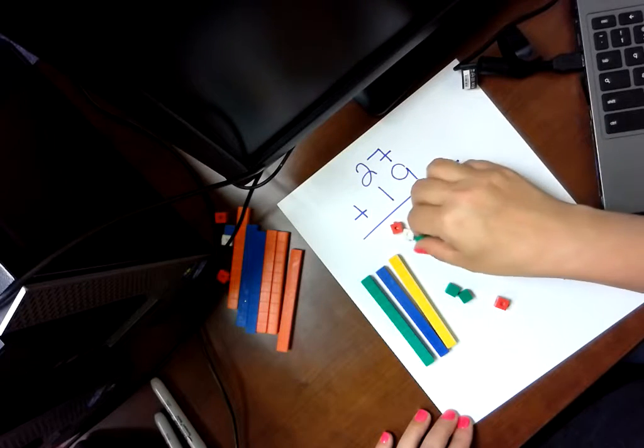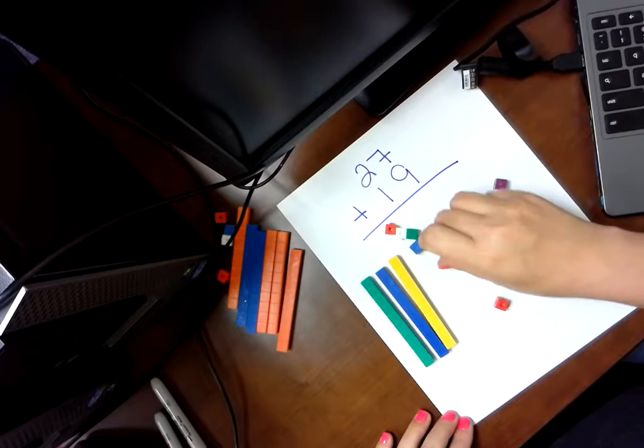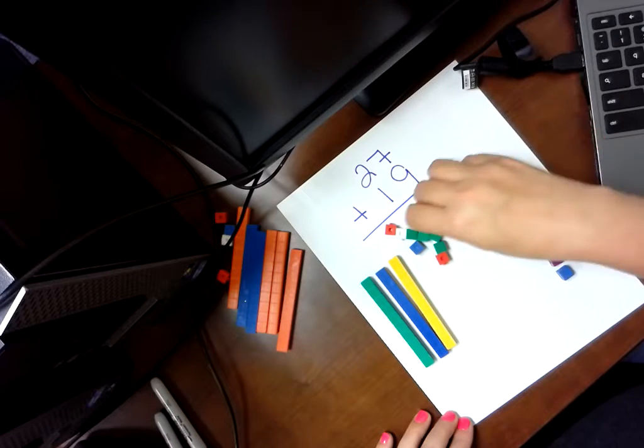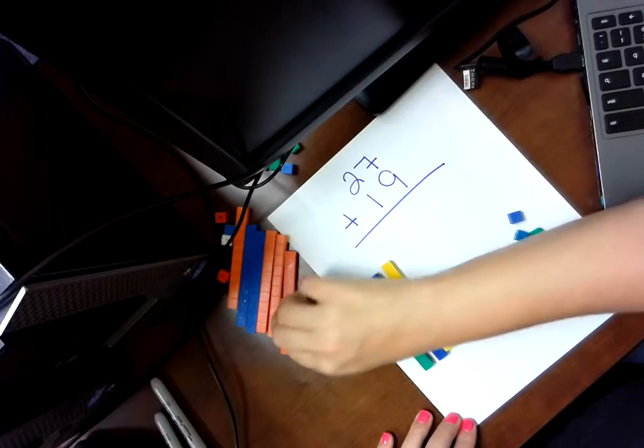1, 2, 3, 4, 5, 6, 7, 8, 9, 10. So I've got 10. I'm going to take that away and bring one of these.